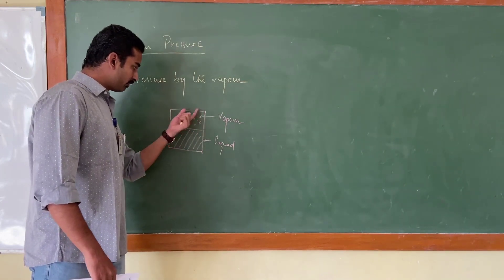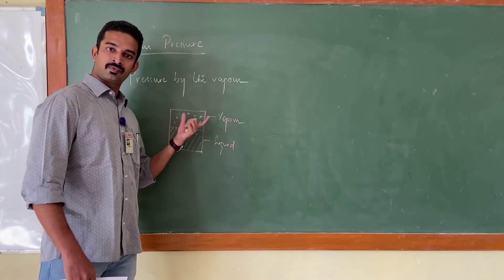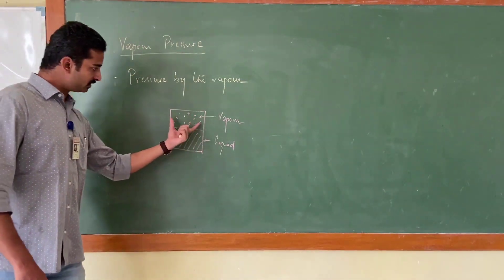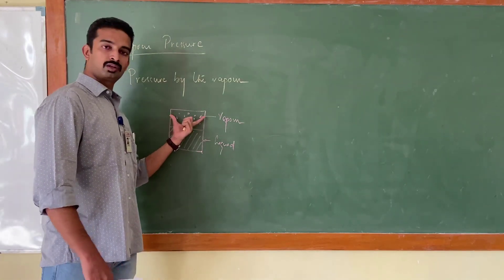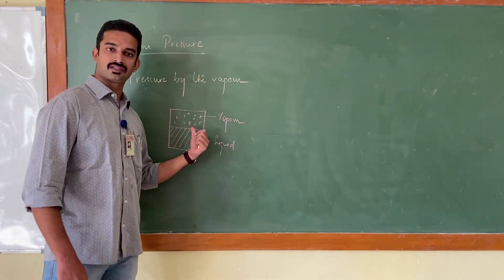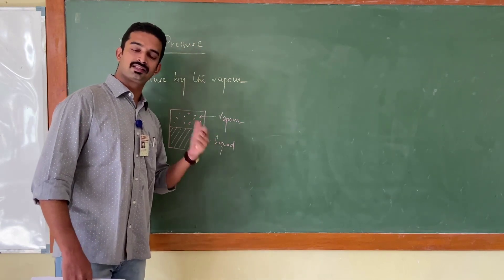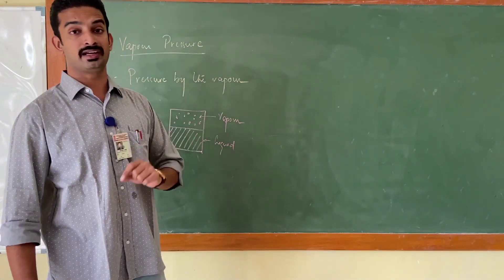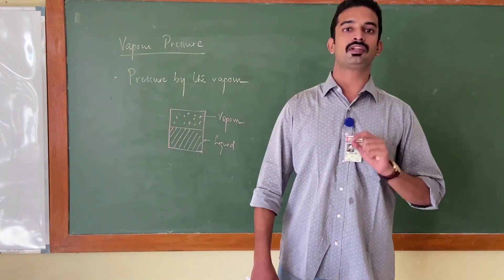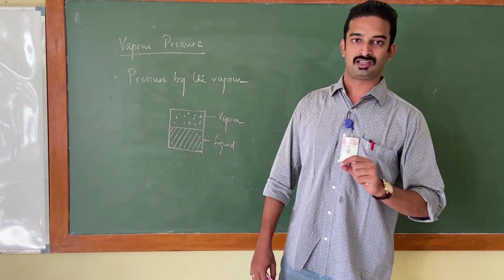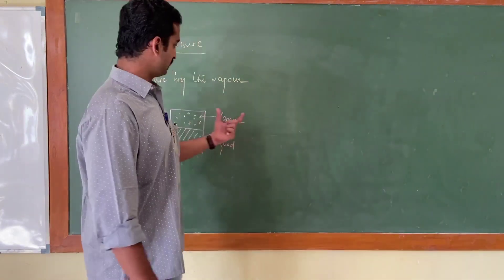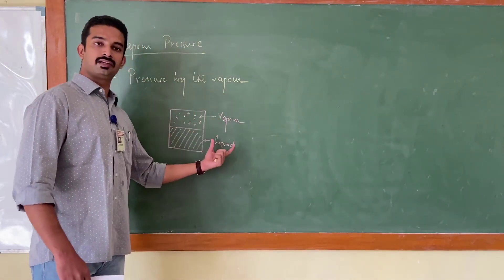This is an enclosed container — the liquid portion is here, and since it is a closed container, the vapors produced by this liquid will be inside the container at a given temperature. Once the vapor and liquid are enclosed, the vapor exerts a pressure on the walls of the container as well as on the liquid surface. This is known as the vapor pressure of the liquid at the given temperature.